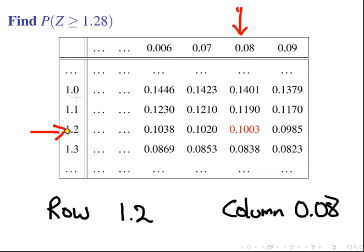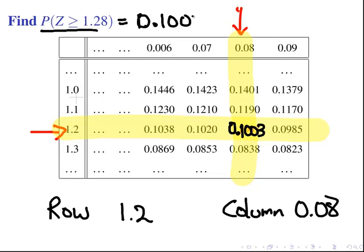Let's see how that works. With the highlighting there it looks a bit hard to read. So it's 0.1003 is the value we get. That's the cross section. The probability of z being greater than or equal to 1.28 is 0.1003, just roughly 10%.